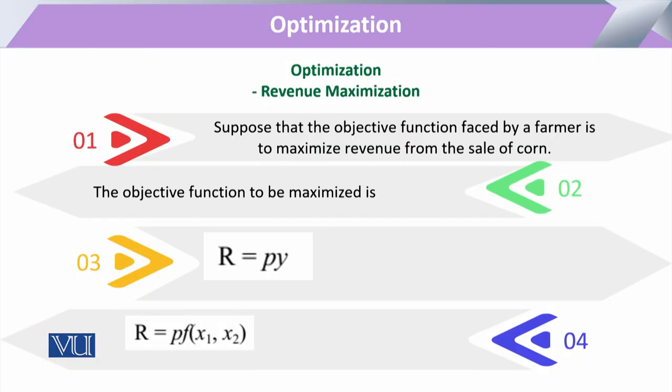The objective function for any farmer, industrialist, or entrepreneur is to maximize revenue. Revenue is always the product of output price and quantity of output. So the objective function is revenue = P × Y. This revenue basically depends upon the amount of inputs utilized for the production of that particular amount of output.